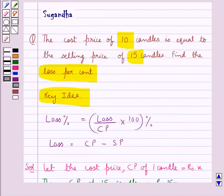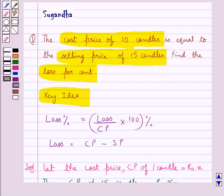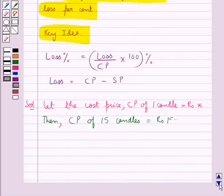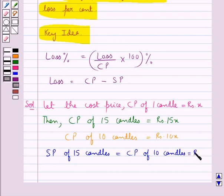Now in the question we have that the cost price of 10 candles is equal to the selling price of 15 candles. So we say that the selling price SP of 15 candles is equal to the cost price CP of 10 candles, and this is equal to Rs.10x.